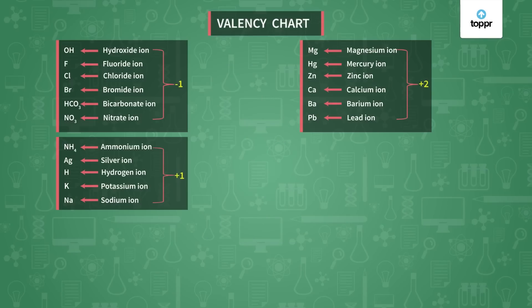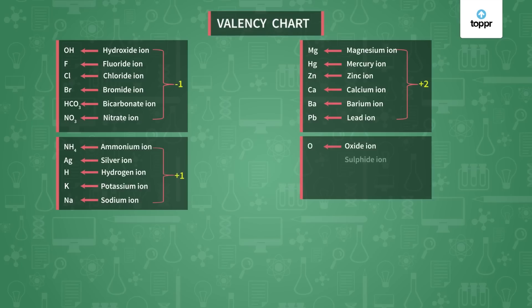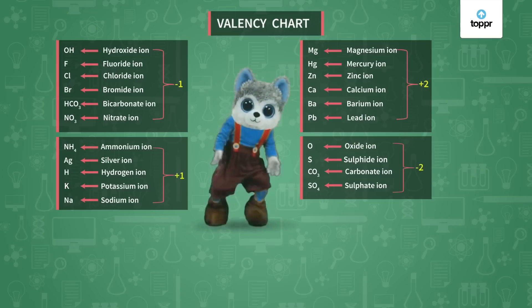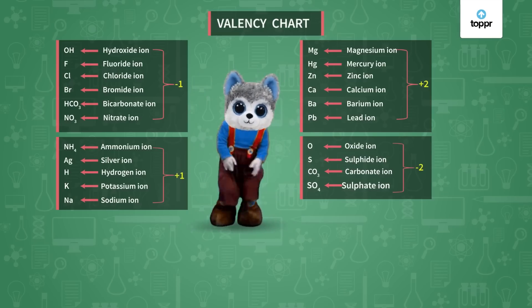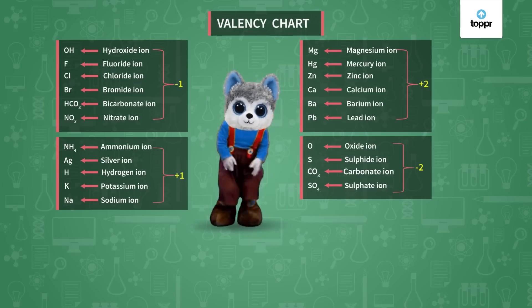Now let's go ahead to the next group. The next group is oxide (O), sulfide (S), carbonate (CO3), and sulfate (SO4). This group has valency minus 2. The song goes: O, S, CO3, SO4, SO4, SO4 — O, S, CO3, SO4 — their valency is 2.